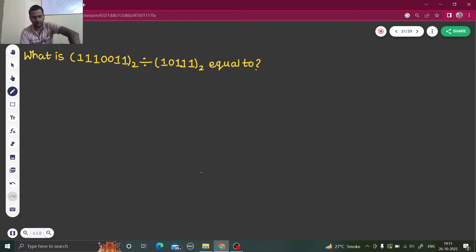So we will perform long division method. So we will write this one, one, one, double zero, double one here. And one, zero, triple one here.